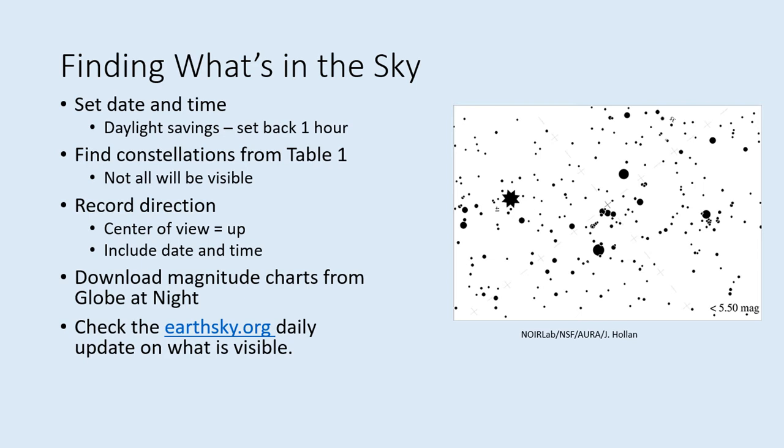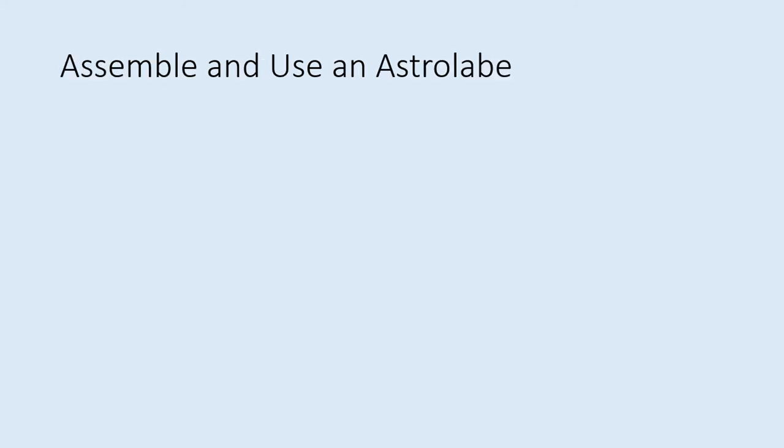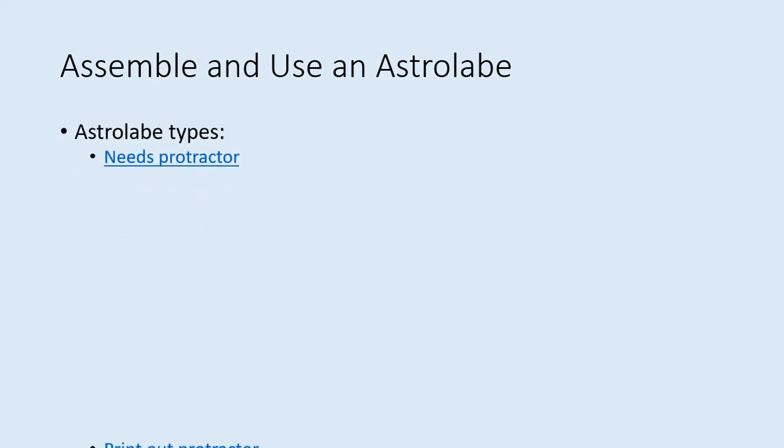Also remember to put together your astrolabe, described on the next slide. One other piece of equipment we'll need for this lab is a simple astrolabe. Here are links to a couple of different models — note that one of them calls it a sextant. I'm going to describe how to put together the first one, which uses a protractor. The other one works in a very similar way, but you have to print out the protractor on paper.